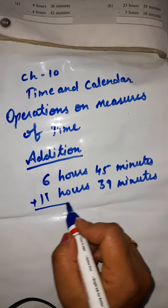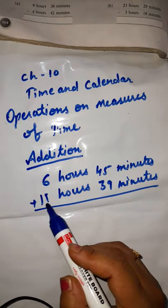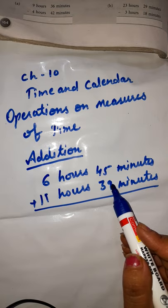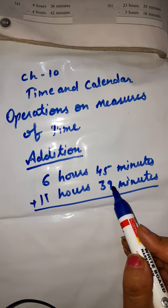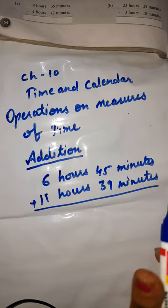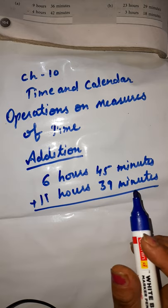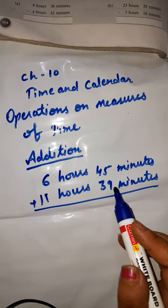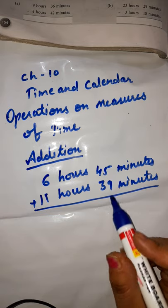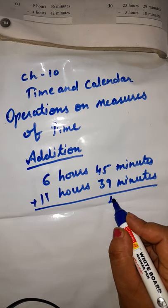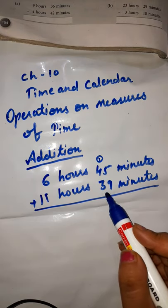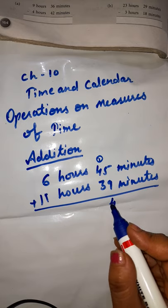Now we will add both the numbers — hours to hours and minutes to minutes. We always start from the ones place. So here, 5 and 9 are in the ones place. 9 and 5 gives 14. We write only 4 and carry 1. Now 4 plus 3 is 7, and 7 plus 1 carry is 8.